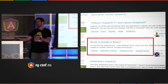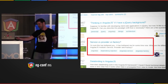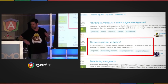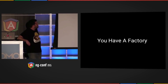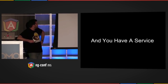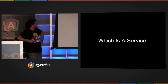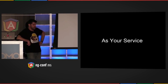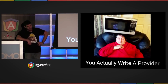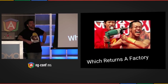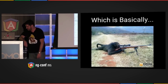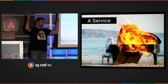Let's call them services. So Angular, let me do you a favor. I'm a consultant, so let me teach you a really, really super easy explanation for beginners just starting with Angular. It goes like this, really simple: you have a factory, which is a service, and you have a service, which is a service, and both have providers. And when you write a factory as your service, you actually write a provider, which returns a factory, which is basically a service.